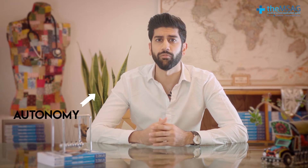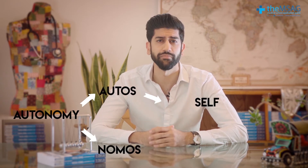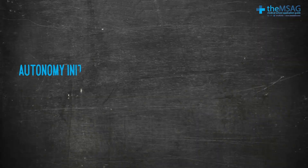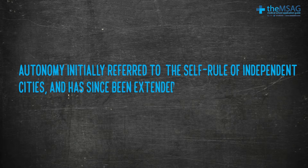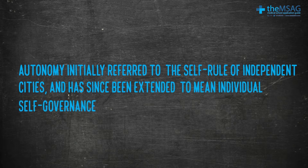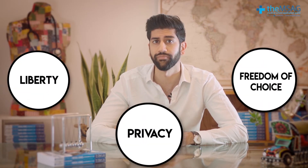But it was not always like that. The word autonomy comes from the Greek word autos meaning self and nomos meaning rule. Autonomy initially referred to the self-rule of independent cities and has since been extended to mean individual self-governance. This latter definition encompasses the liberty, privacy and freedom of choice of the individual.